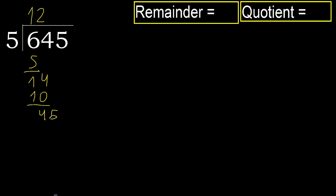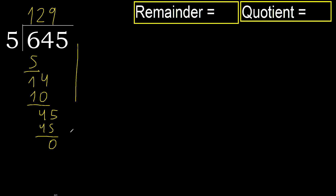45. 5 multiplied by 9 is 45 — 45 is not greater. Subtract: 0. Next.